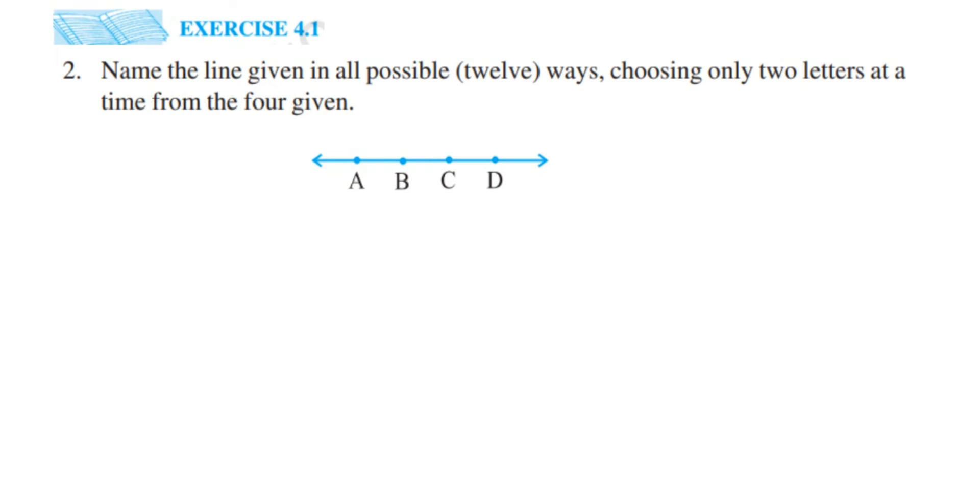So there are four points A, B, C, D on this line and we have to write down the name of the line. There are 12 possible ways. We know that a line can be extended in both directions, right? There are arrows given which means this can be extendable and there are countless number of points on it.